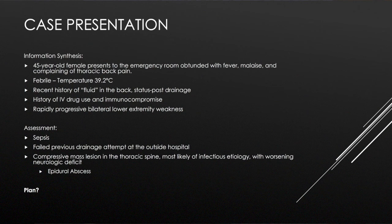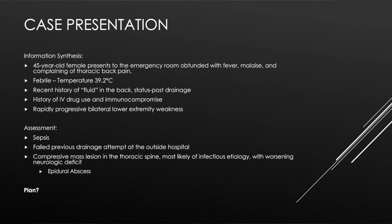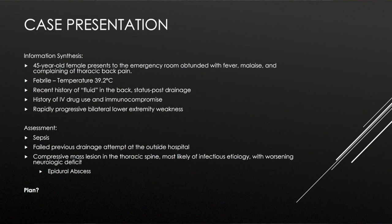As we synthesize all this information, we have a 45-year-old female presenting with thoracic back pain, malaise, and fever, now with a temperature of 39.2 and a compressive mass lesion in her spine causing significant muscle weakness in the lower extremities. This is progressive and requires immediate intervention. This is most likely an epidural abscess and she will need to go to the operating room.